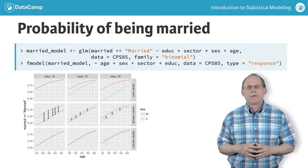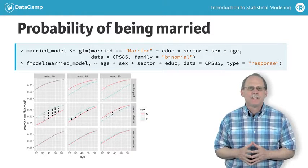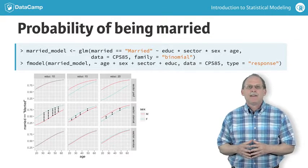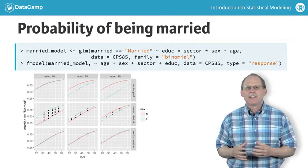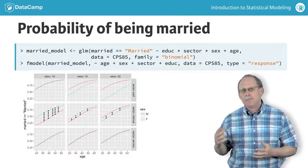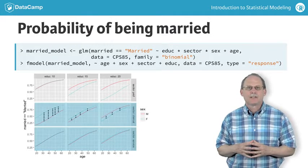This plot shows the probability of being married for the people in the CPS 85 dataset as a function of age, education, and sector. The effect size of sex, that is the difference between marriage rates for men and women, is big in the clerical sector, but small in the service sector.